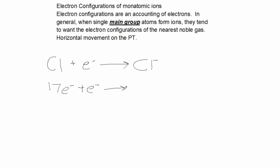After the reaction, it has 18 electrons. Remember that if neutral chlorine has 17 electrons, it has 17 protons. We know it has 17 protons because that's the atomic number in the periodic table.